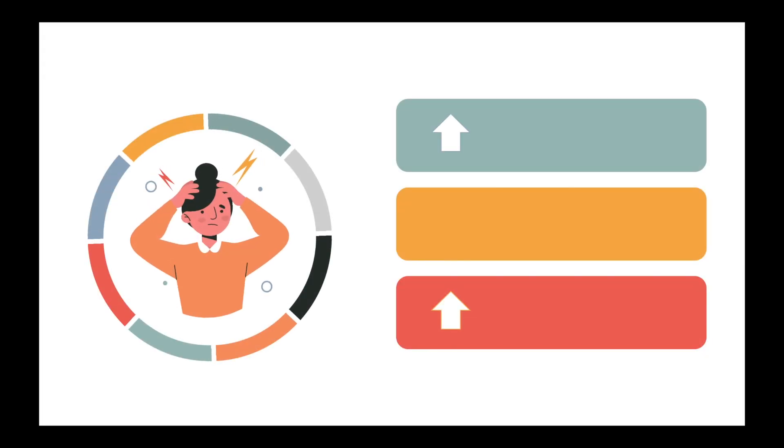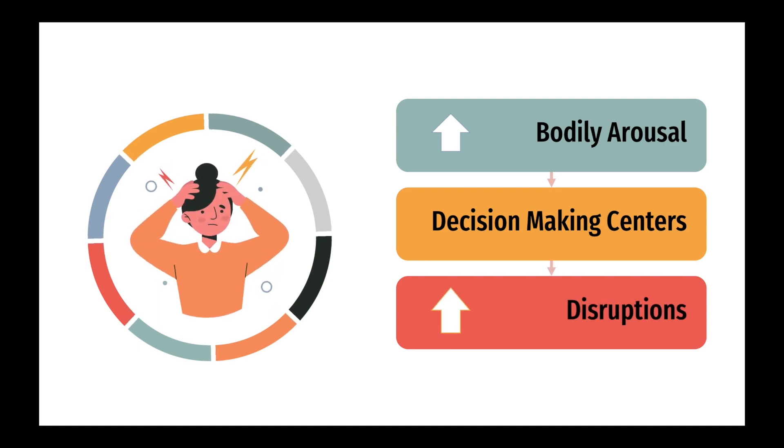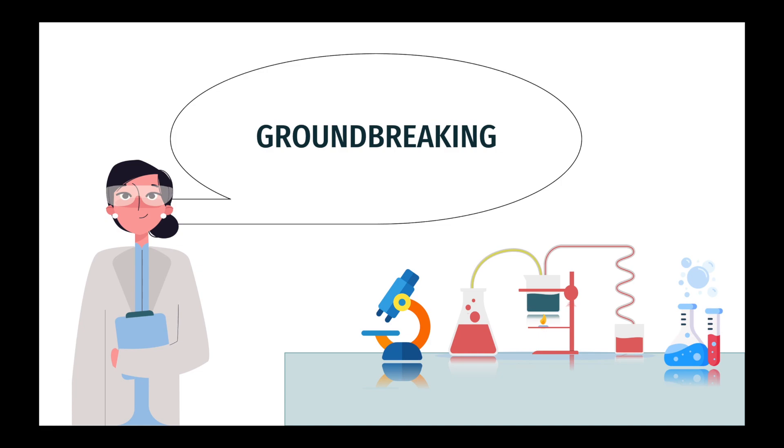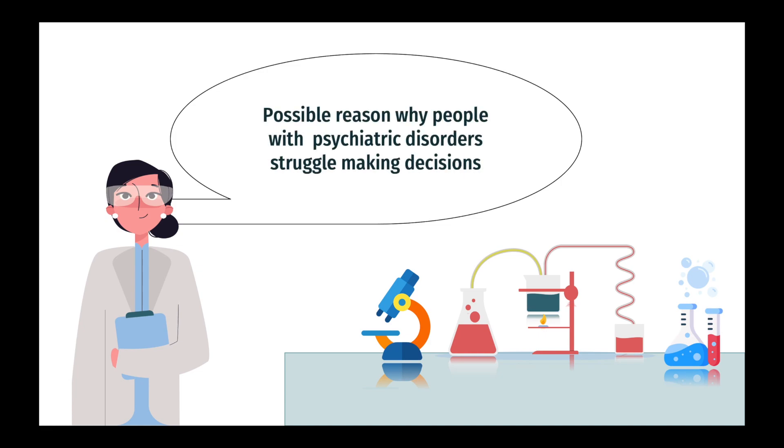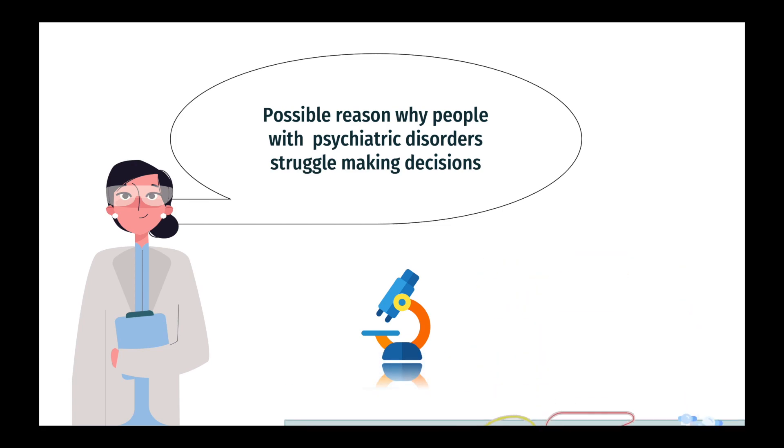Ultimately, they concluded that a heightened level of bodily arousal can change the makeup of decision-making centers, leading to disruptions. This result is groundbreaking, as it proposed a possible reason as to why individuals with psychiatric disorders may struggle with making decisions at a neuronal level.